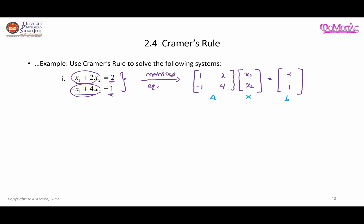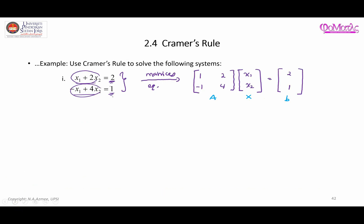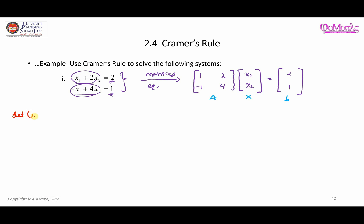What we can do first is find the determinant of A, since the formula requires it. The determinant of matrix A is obtained from these values: 1 times 4 is 4, minus 2 times -1 which is -2, giving us 6. So the determinant of matrix A is 6.